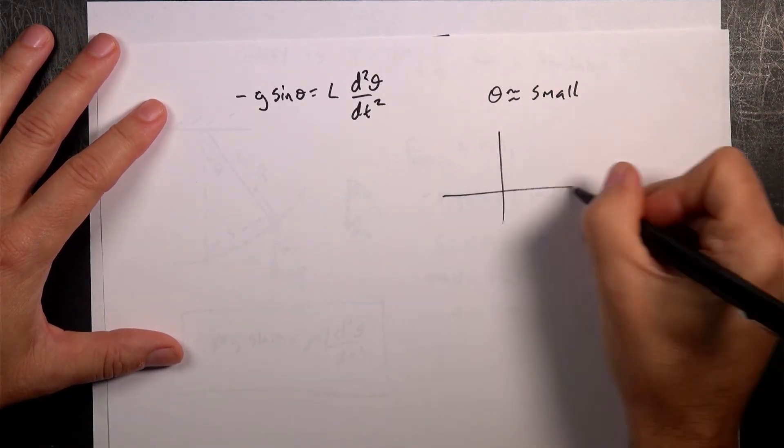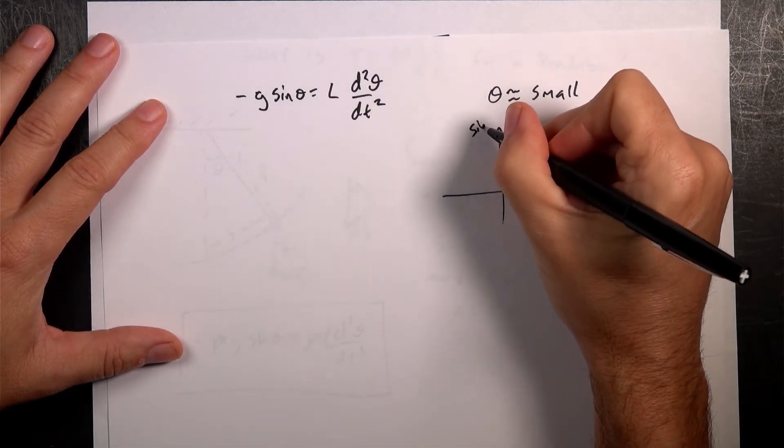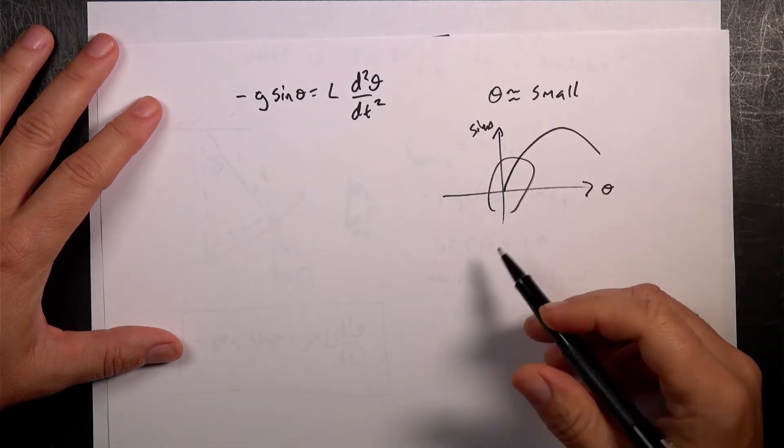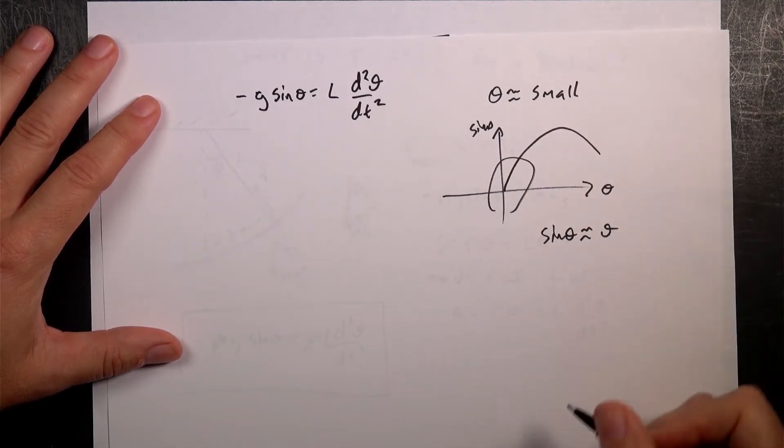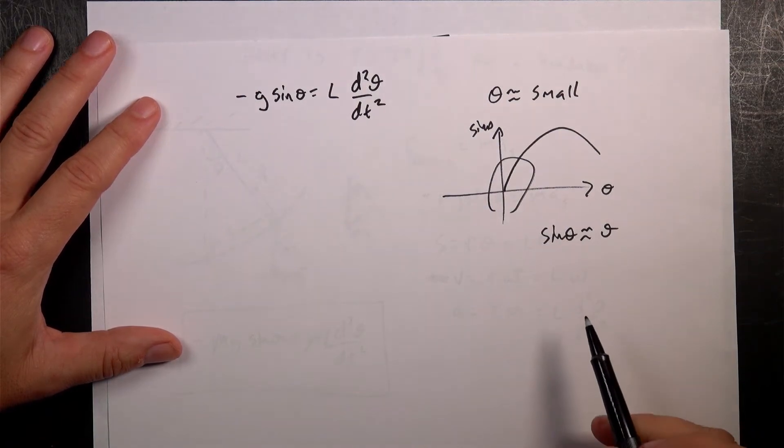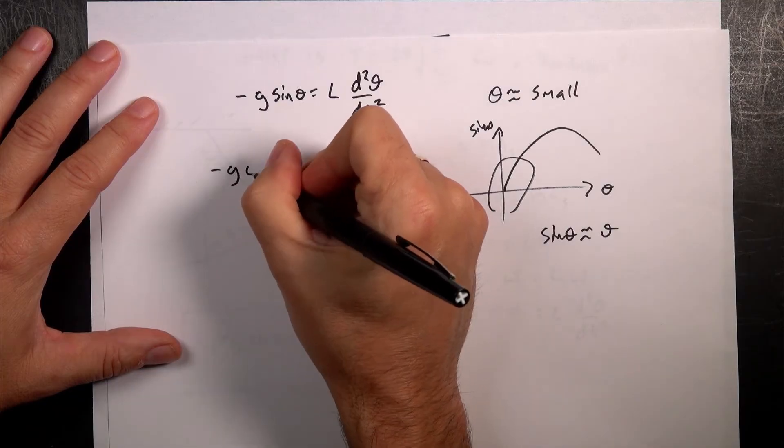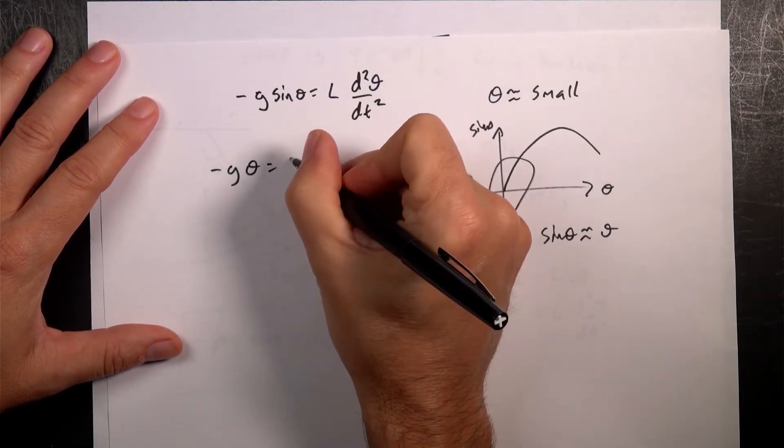I'll say small. And if you plot sin theta as a function of theta, it looks like this. And so, if you're in this region right down here, sin theta is approximately equal to theta. So, for small angles, I can replace sin theta with theta. So, now I have negative g theta.